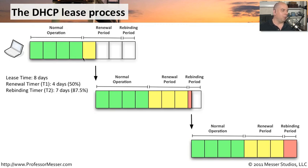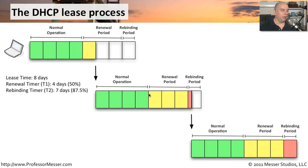When we hit day 5 — the 50% mark — we try to check in with the original DHCP server. If we get a response, the timer resets and we have another four days. But what if the DHCP server isn't there anymore? We keep checking in on days 5, 6, and into day 7. At that point, we're just not going to hear from it, so we go into the rebinding period where we ask any DHCP server out there for an IP address.